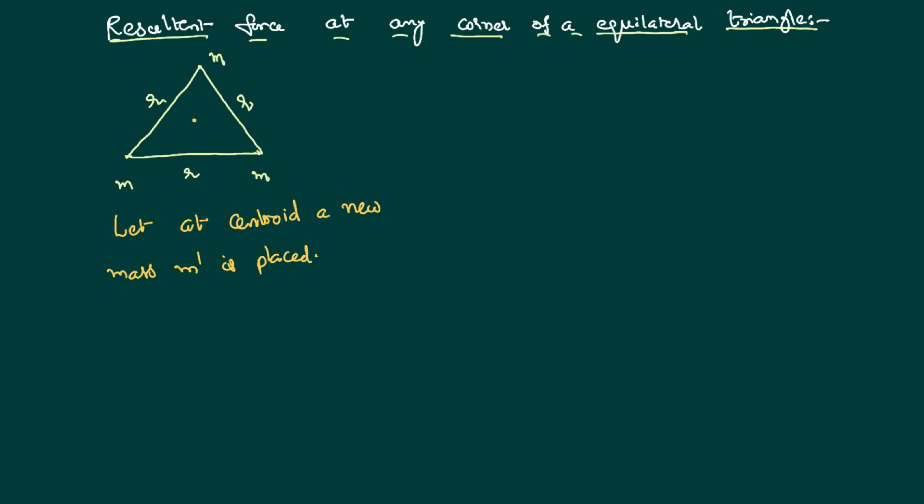Now, I would like to know, what is the resultant force experienced by that M dash? On this M dash, which is placed at the centroid, there will be multiple forces acting. There will be a force due to M, this first one. What kind of a force it is? Attractive force. There will be a force due to the other mass also, that is also attractive. Gravitational force is always attractive. And gravitational force due to this one is also attractive. So, these three forces are acting on the same particle simultaneously.